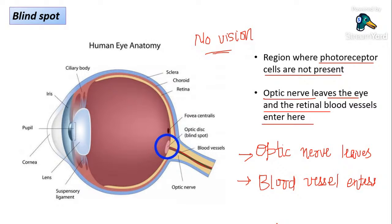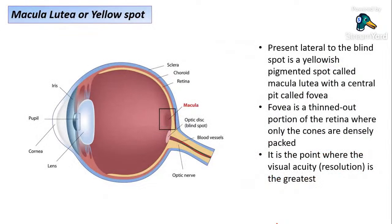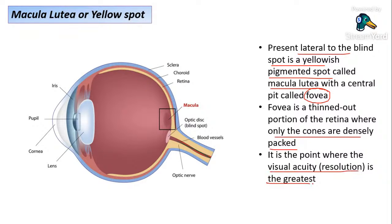The area where the optic nerve leaves and the blood vessels enter is called the blind spot. Lateral to the blind spot is the macula lutea, also called fovea centralis or yellow spot. It is a thinned-out portion of the retina with a central pit called the fovea centralis, where cone cells are densely packed, giving the highest visual resolution. The region of highest visual activity in the retina is the fovea centralis or yellow spot.